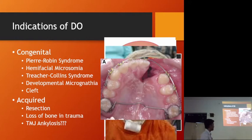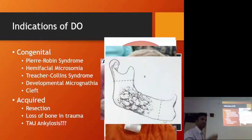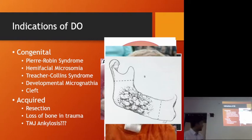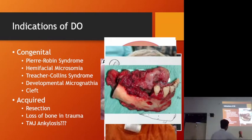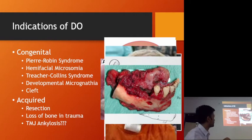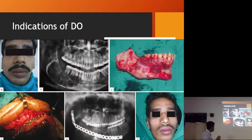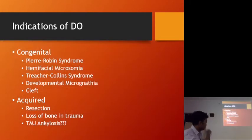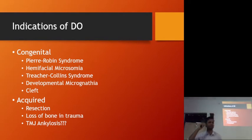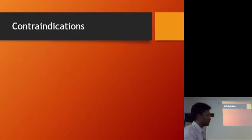Then there are acquired defects — resection because of tumor, carcinoma, or cyst. In case of carcinoma, a generous one-centimeter margin is taken around the CA to avoid any recurrence. Examples include mandibular body carcinoma with resection of half the mandible, ameloblastoma resection, and TMJ ankylosis where we create a gap while freeing the mandible.